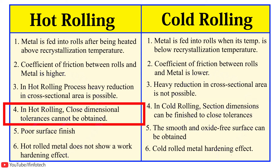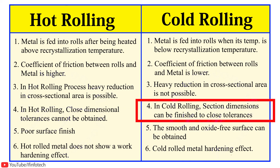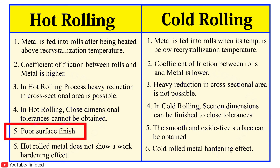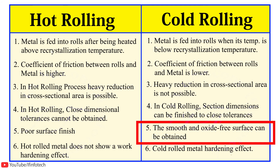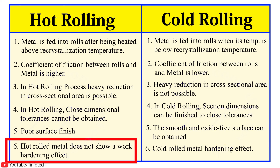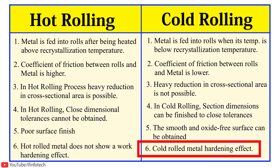In hot rolling process, close dimensional tolerances cannot be obtained, whereas in cold rolling process, section dimensions can be finished to close tolerances. The surface finish in hot rolling process is poor, but in cold rolling process, smooth and oxide-free surface finish can be obtained. In hot rolling process, rolled metal does not show work hardening effect.